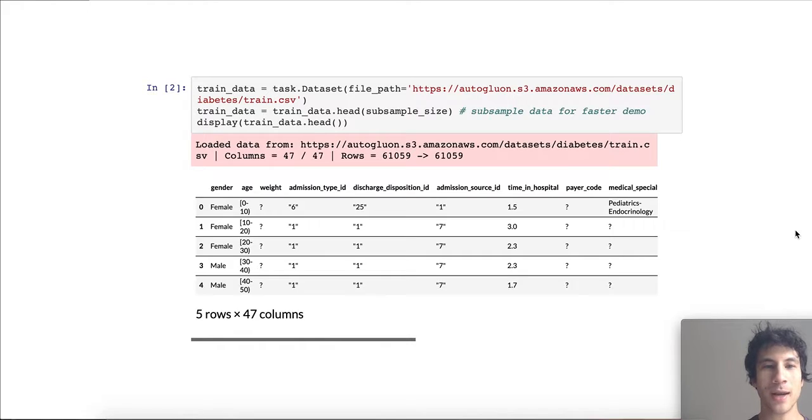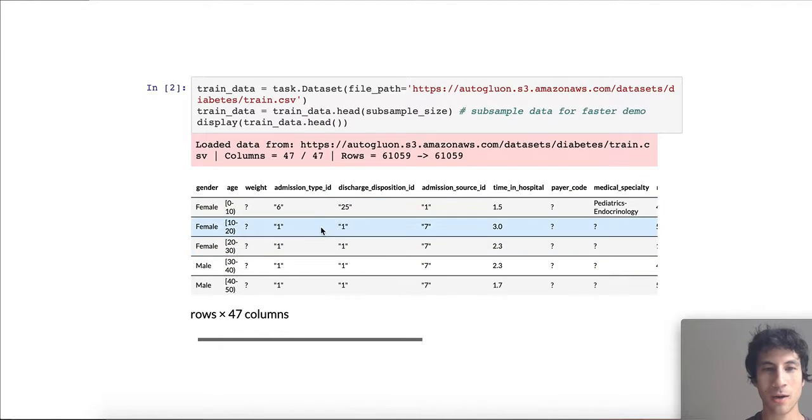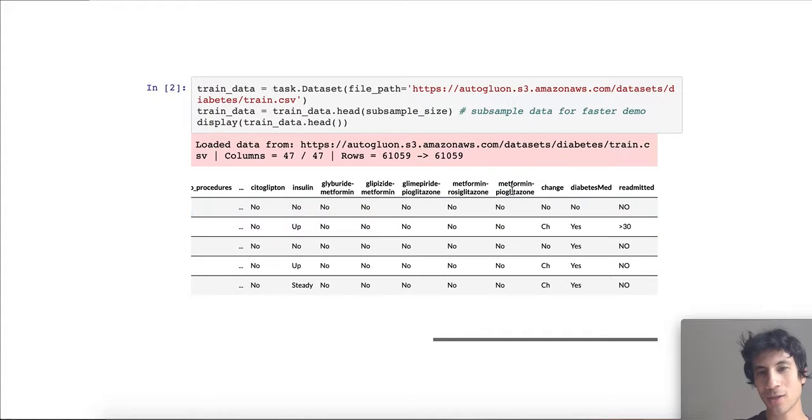That said, we can load the data via this command, which produces this train_data object that is essentially just a pandas dataframe with maybe some additional functionality. We can call head on this object to just keep the first 600 patients' data only, and then we'll show just the first five rows of the dataframe. So this is the data from the first five patients. There's 47 columns in this dataframe. The original dataframe had 60,000 rows, but again, we're only going to be working with 600 of these rows in this tutorial to make sure it runs quickly. And you can see the data contain various features measured in these patients, like their age, weight, what kind of medications they were given, as well as whether or not they were readmitted to the hospital after this visit.